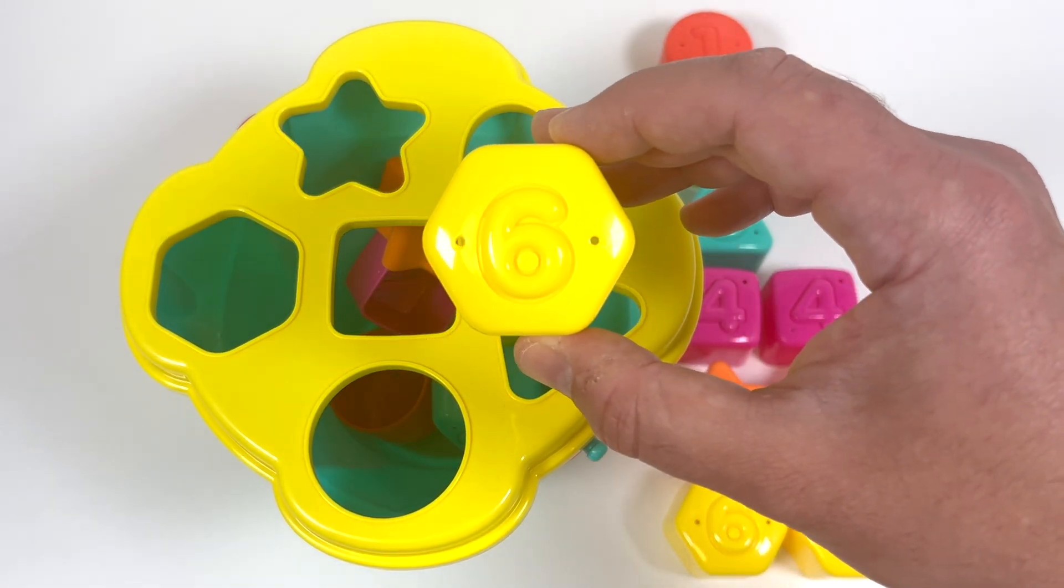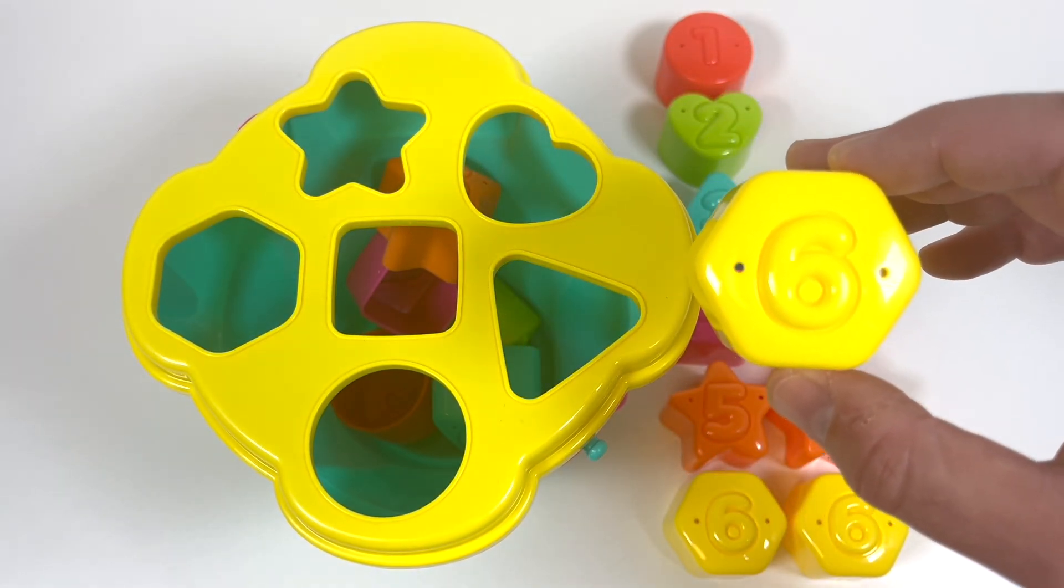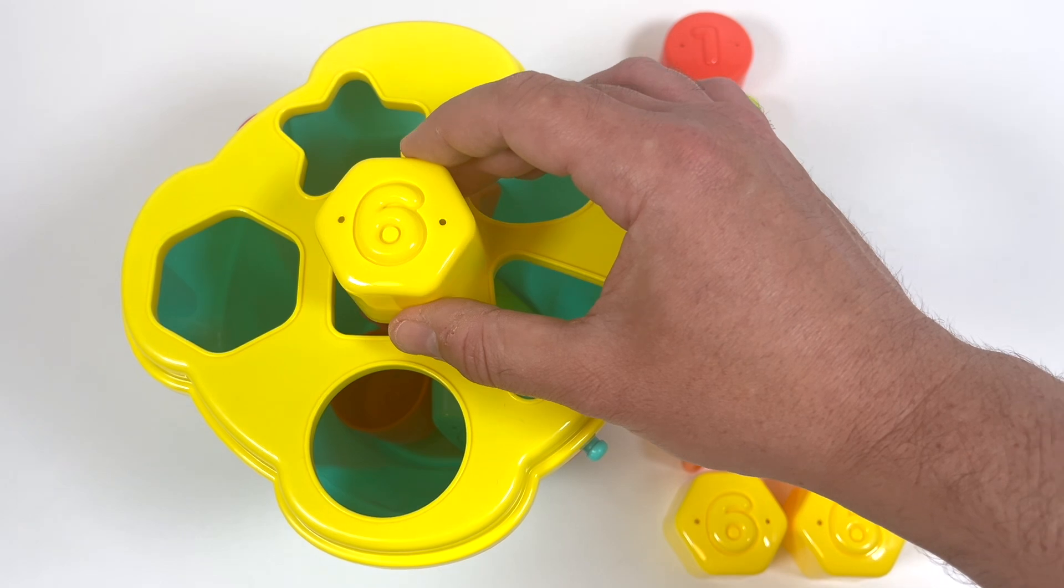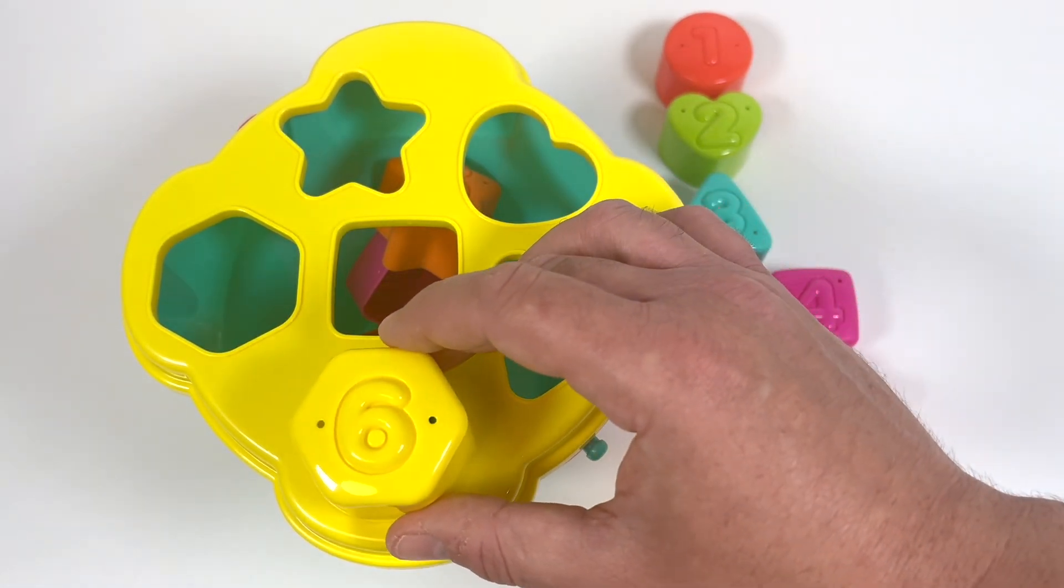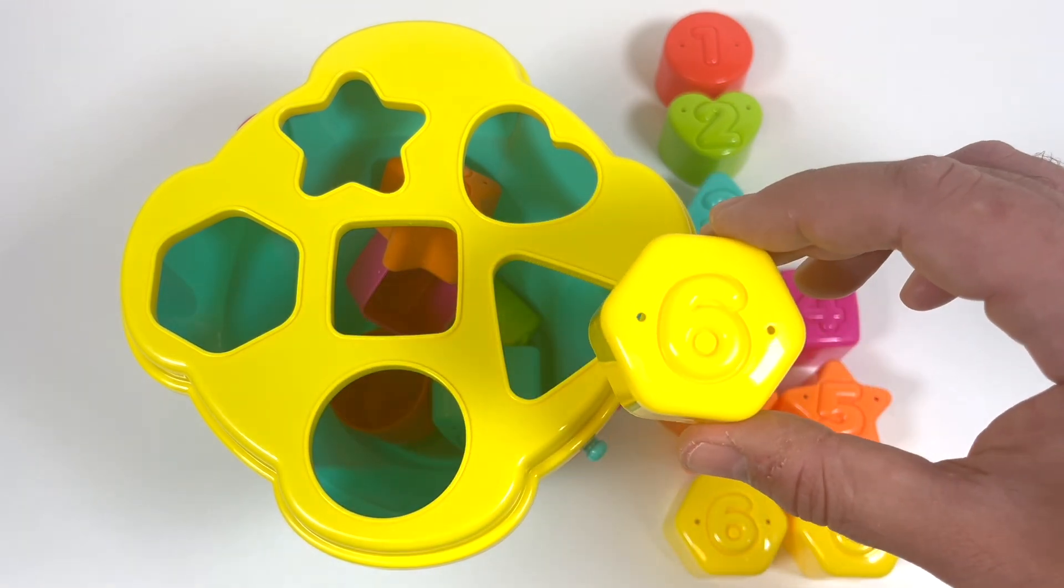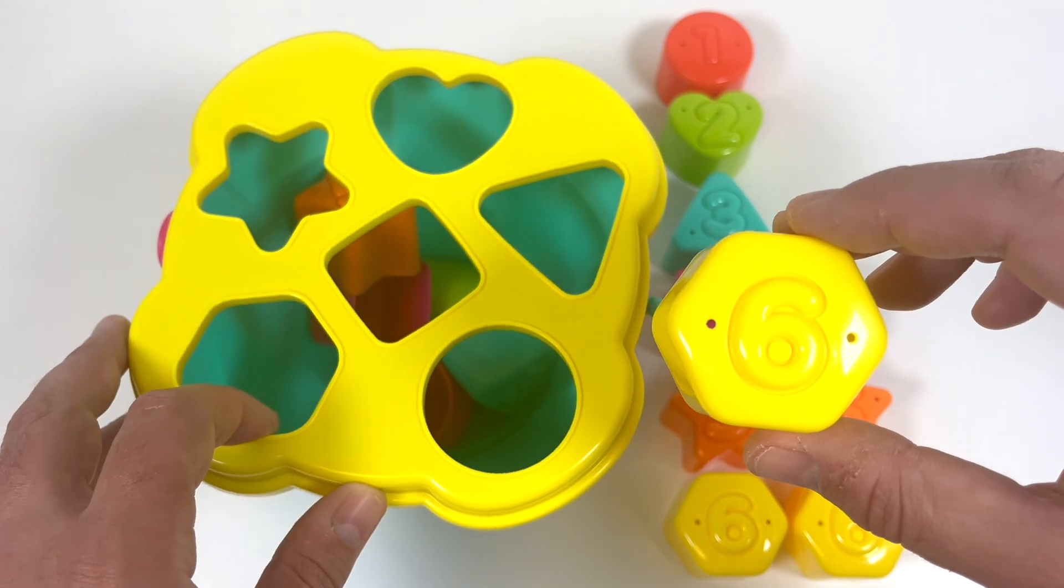And lastly, we have number 6. That's the yellow hexagon. Okay, this is a tricky one. Is this right? Nope, that's a square. Maybe here? No, that's a circle. Ah, here it is. Well done.